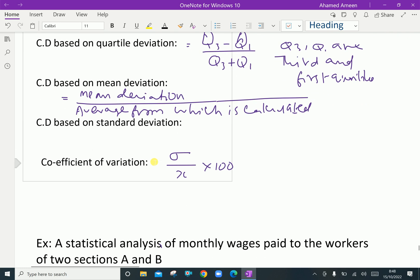The Coefficient of Variation is (σ / X̄) × 100, where σ is standard deviation and X̄ is the mean.